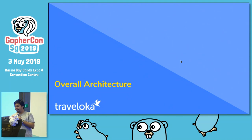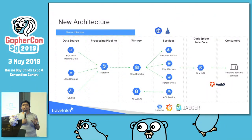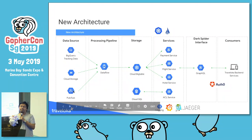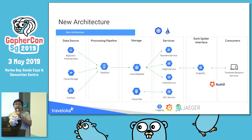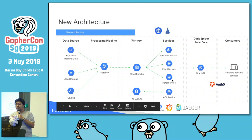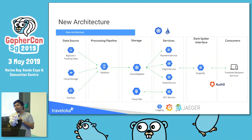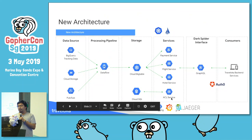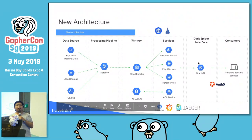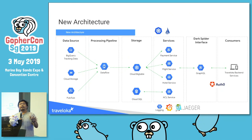This is the new architecture. The ETL pipeline stays the same — BigQuery, Cloud Storage, Pub/Sub, Dataflow, and Bigtable. Previously we had one single monolith Java app; now we're separating it into several smaller services by domain. We have a flight service, hotel service, and payment service — all domain-specific data goes to its respective service. We also have supporting services like an ACL service for permission checks. Finally, a GraphQL gateway pulls data from internal microservices and returns it to clients.